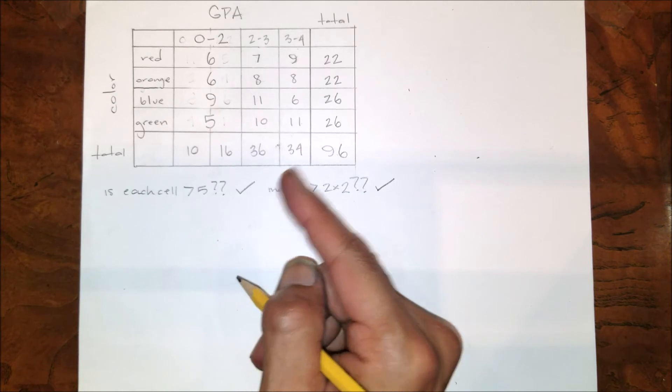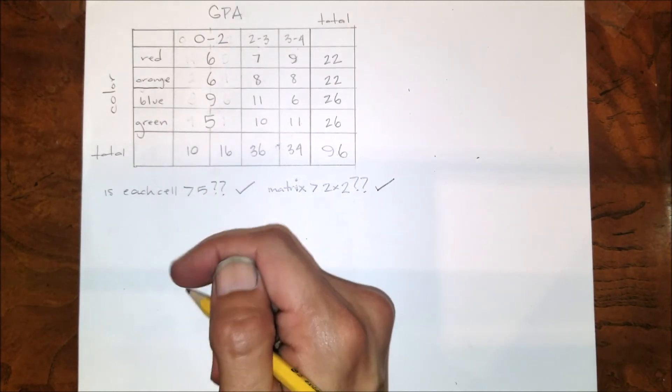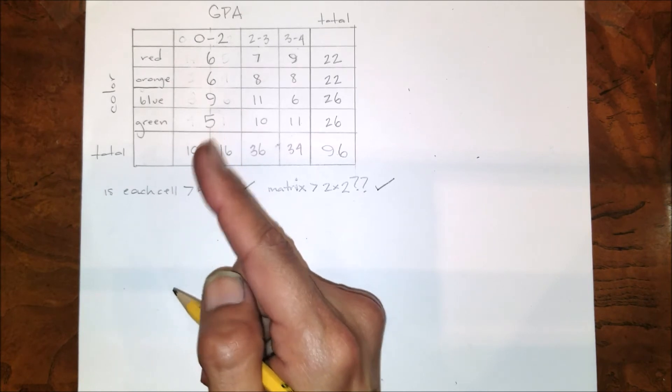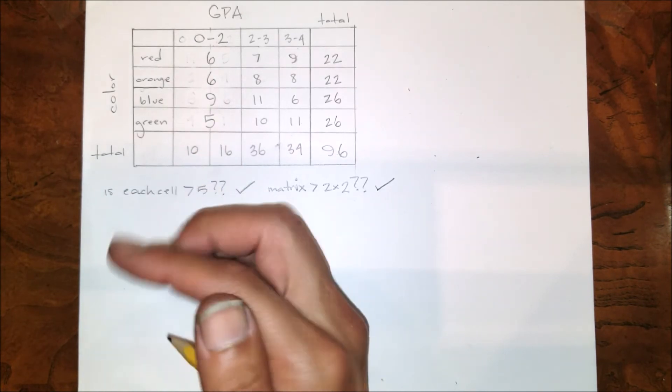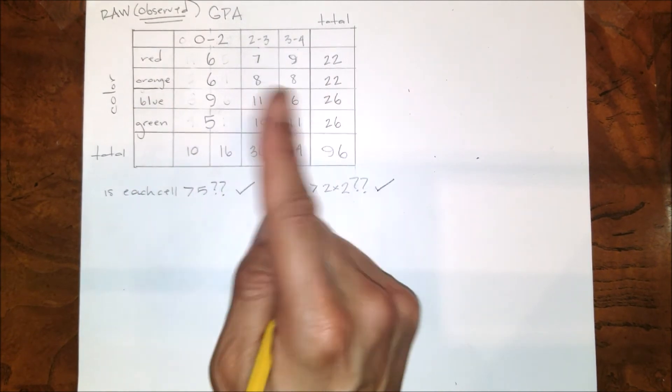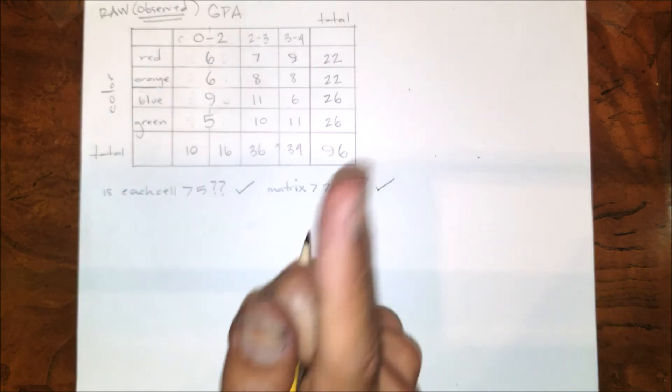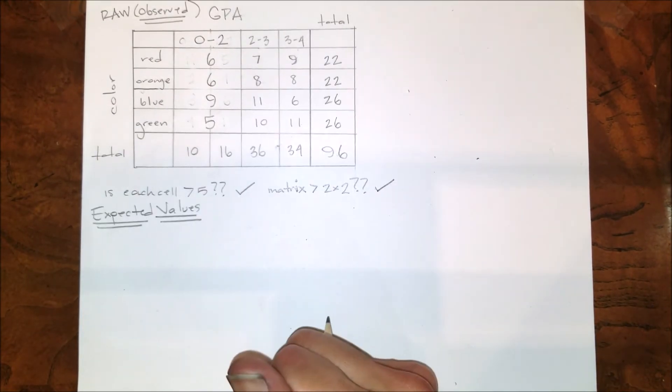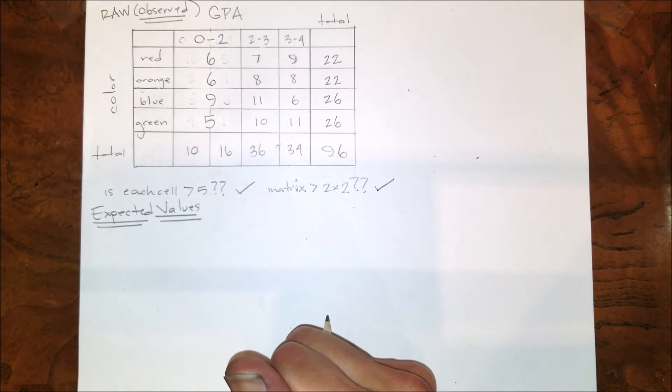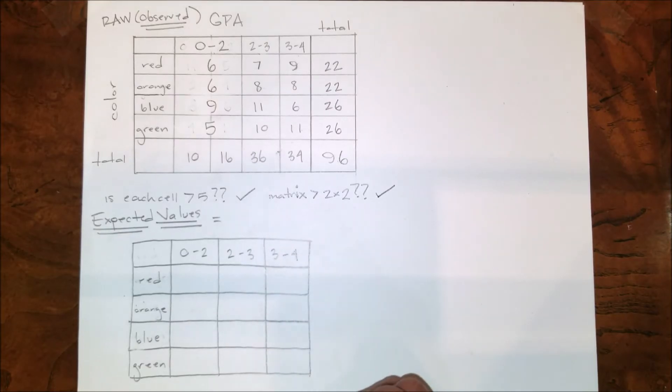Now this first matrix of our observed data is called exactly that - our raw data is actually called our observed data. Now we need another matrix exactly like this one to calculate expected values. So let's see that new matrix. Now let's not forget how to find expected values for each of these cells.